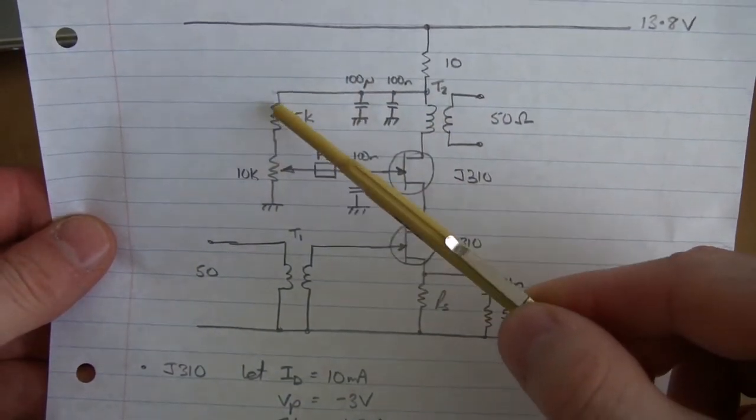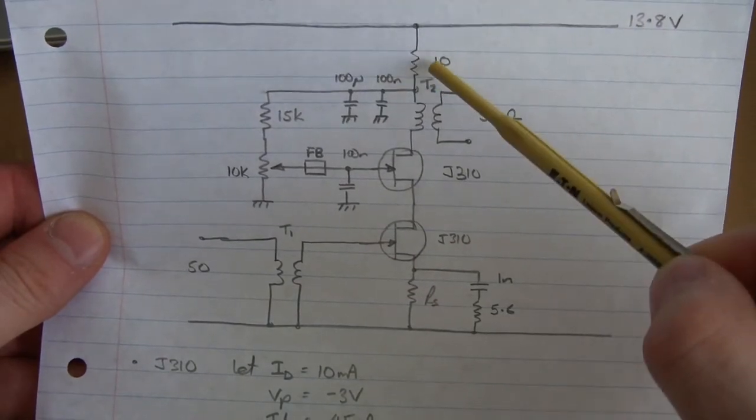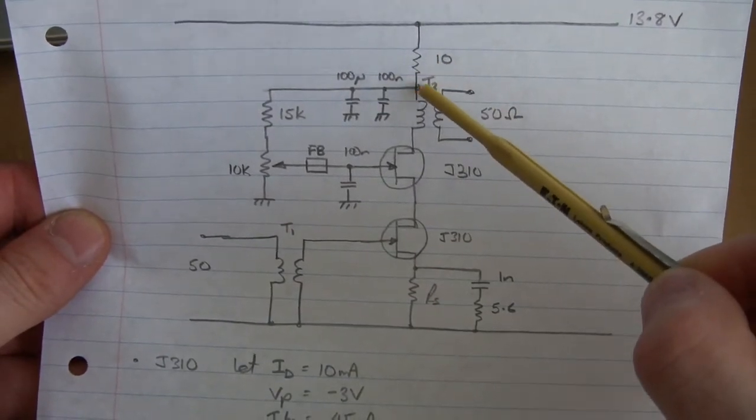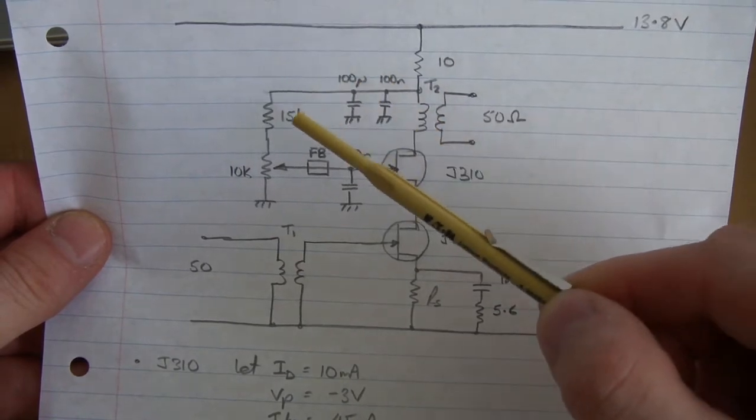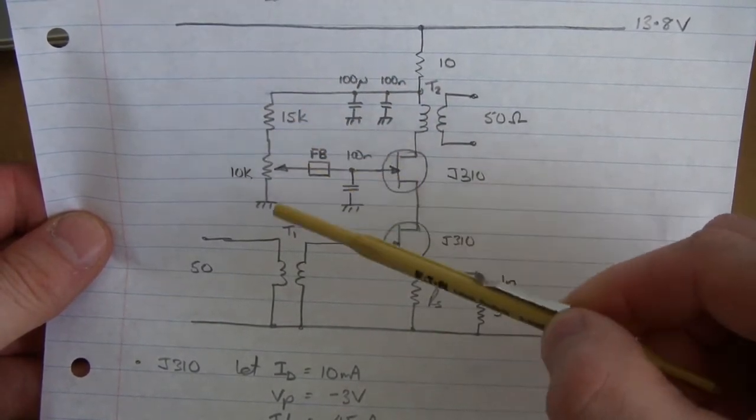Up here we can see the gain control. So we've got our 13.8 volts just coming through a small isolating resistor here. On the output of that, some decoupling, and then I'm taking that voltage and putting it through this voltage divider network here.